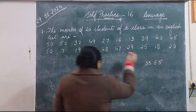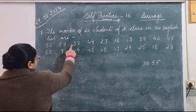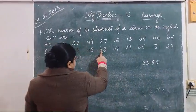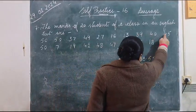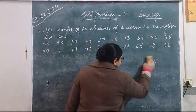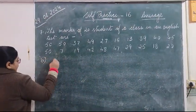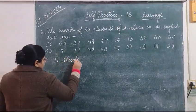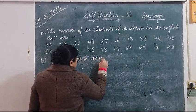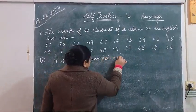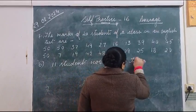So how many students scored more than average marks? Counting: 1, 2, 3, 4, 5, 6, 7, 8, 9, 10, and 11. So 11 students scored more than average marks. Write the answer: 11 students scored more than average marks.